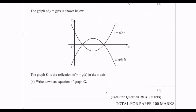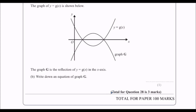The graph of y equals g(x) is shown below. So this is g(x) — what's happened to this one? The y-values have changed; it's outside the bracket, and they've been negated. So what was positive has become negative, and what was negative has become positive. So it's very simply minus g(x).